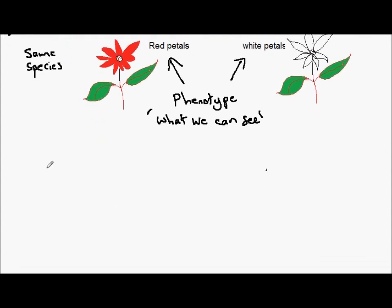If we take a red petal plant and reproduce this with another red petal plant, the offspring, when germinated and grown, flower to produce red petals. Their phenotype is red.